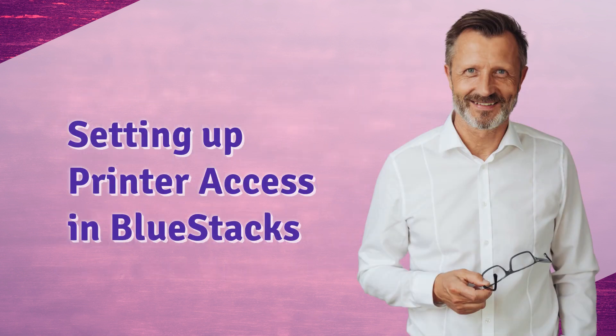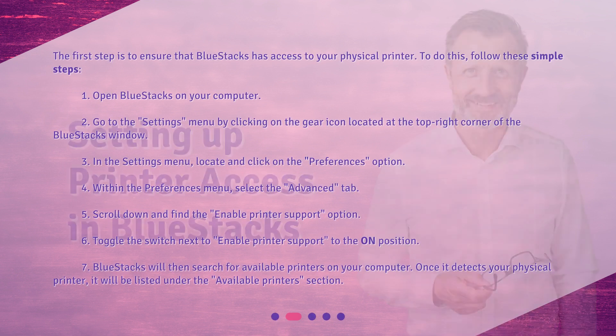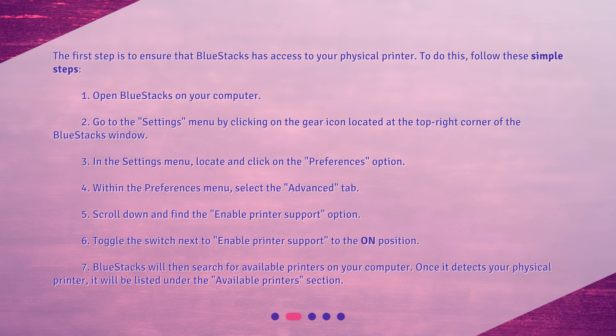Setting up printer access in BlueStacks. The first step is to ensure that BlueStacks has access to your physical printer. To do this, follow these simple steps. 1. Open BlueStacks on your computer. 2. Go to the Settings menu by clicking on the gear icon located at the top right corner of the BlueStacks window.